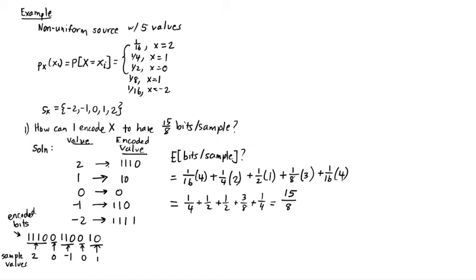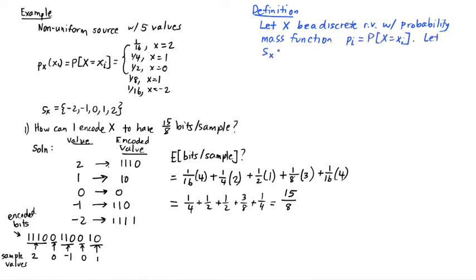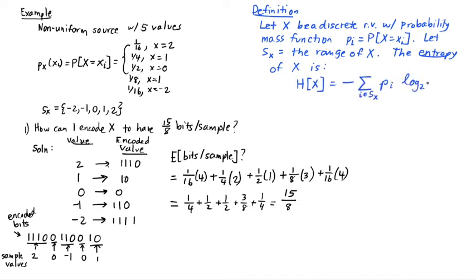And what I do get is 15 eighths bits per sample out of this encoding scheme. So that gets me to my motivation for coming up with the definition of entropy. So let x be a discrete random variable with probability mass function p_i used to denote the probability that x is equal to little x_i. Let S_x be the range of x. The entropy of x is H(X) equals minus the sum from i in the set S_x, p_i log base 2 p_i.